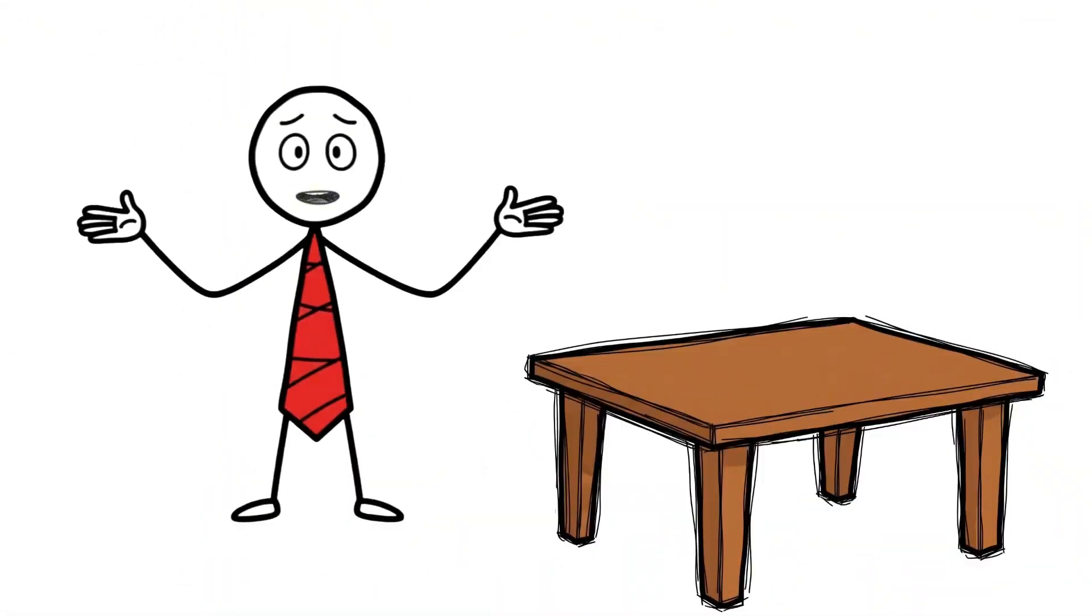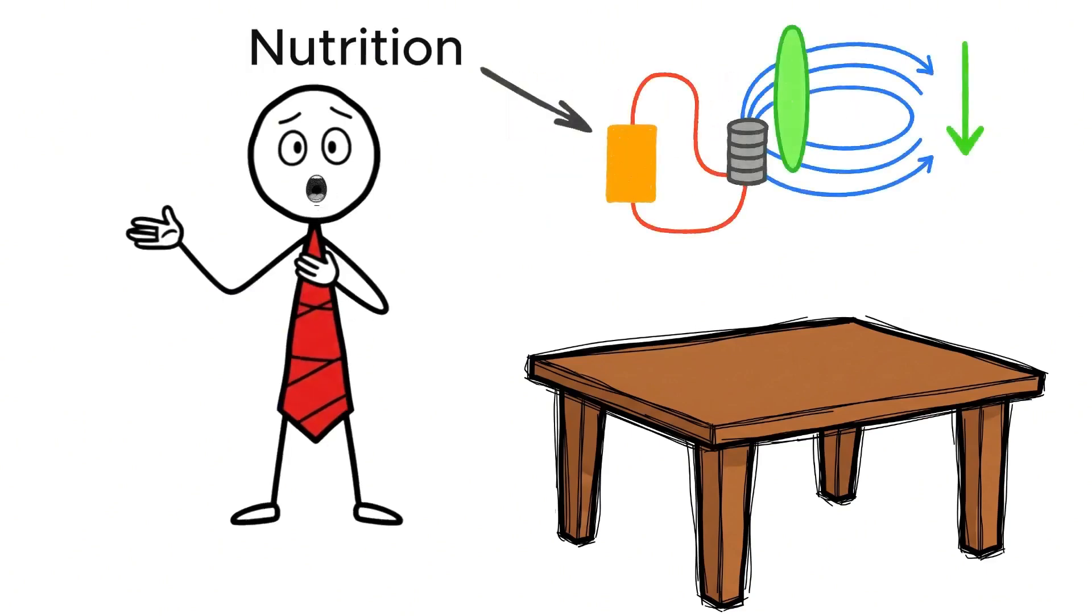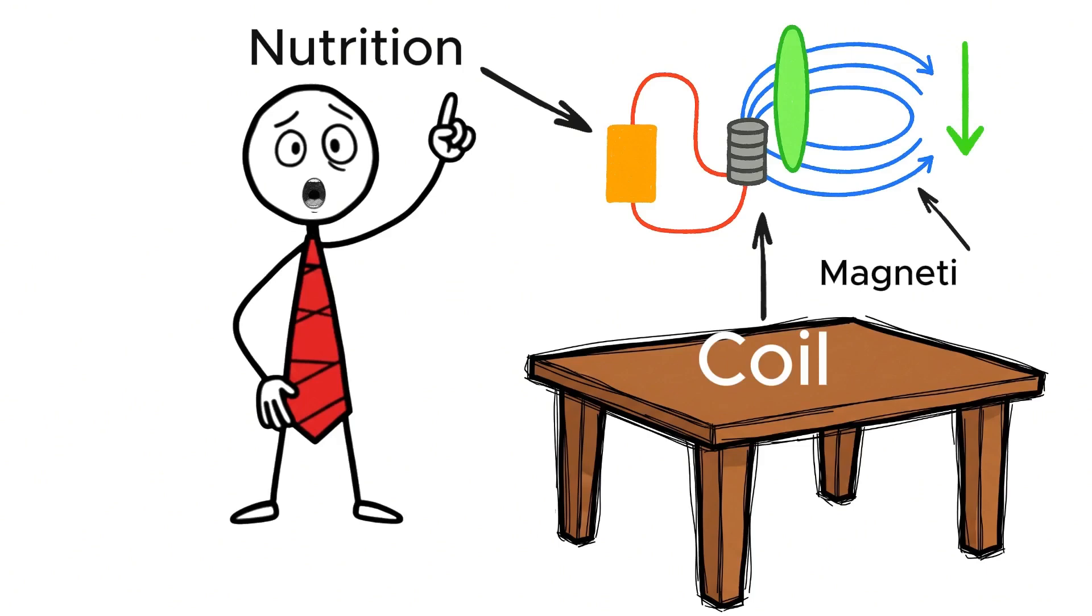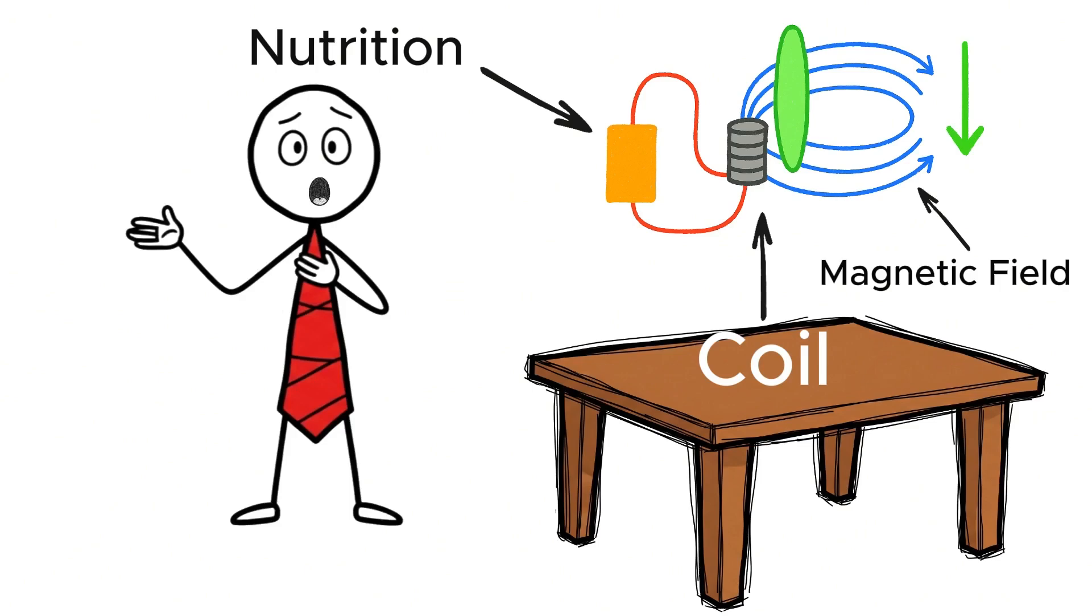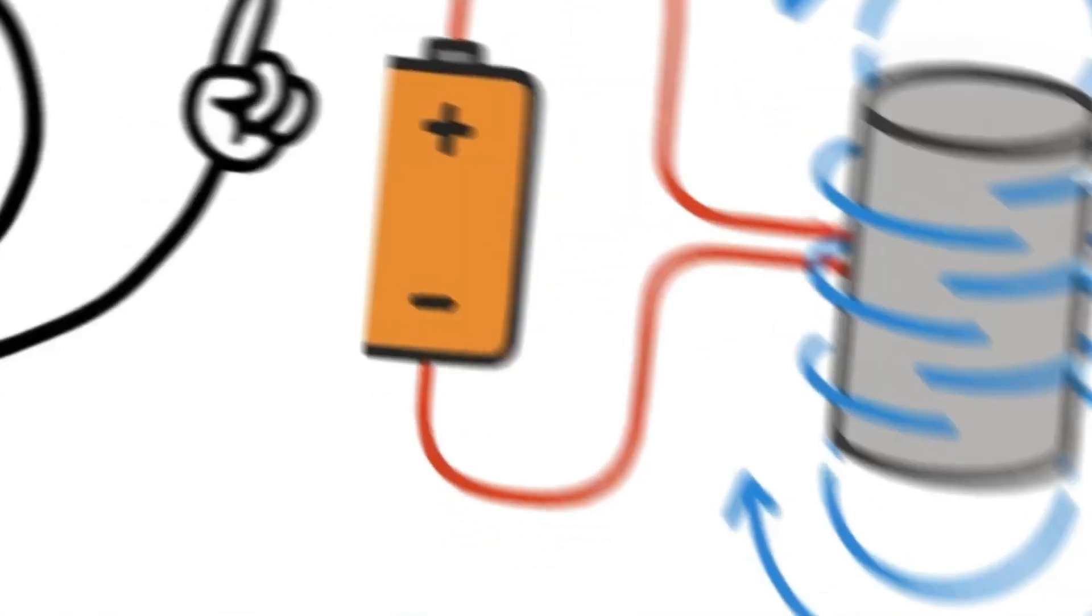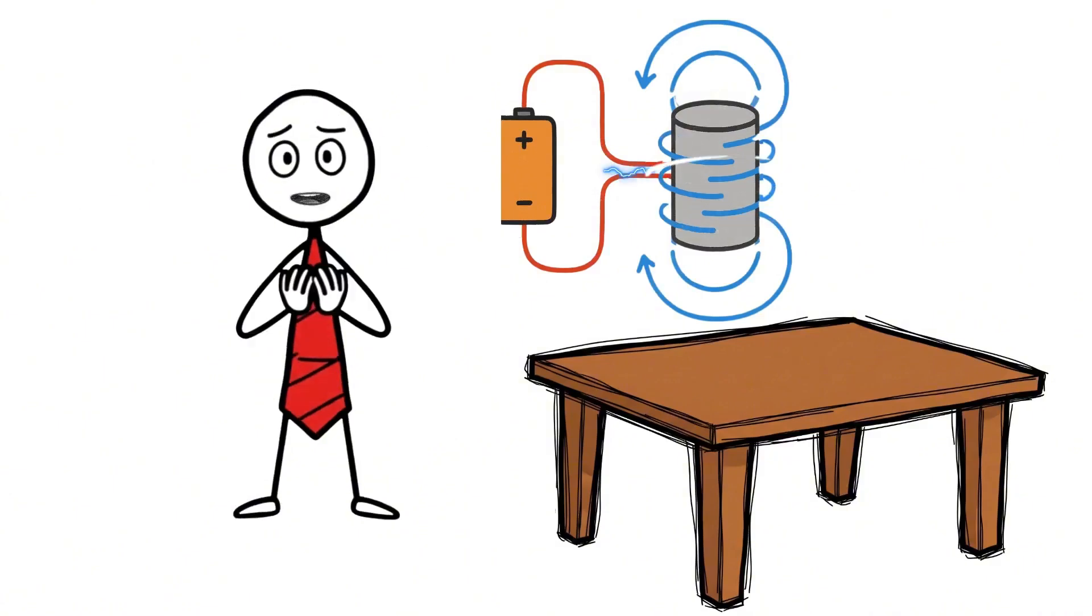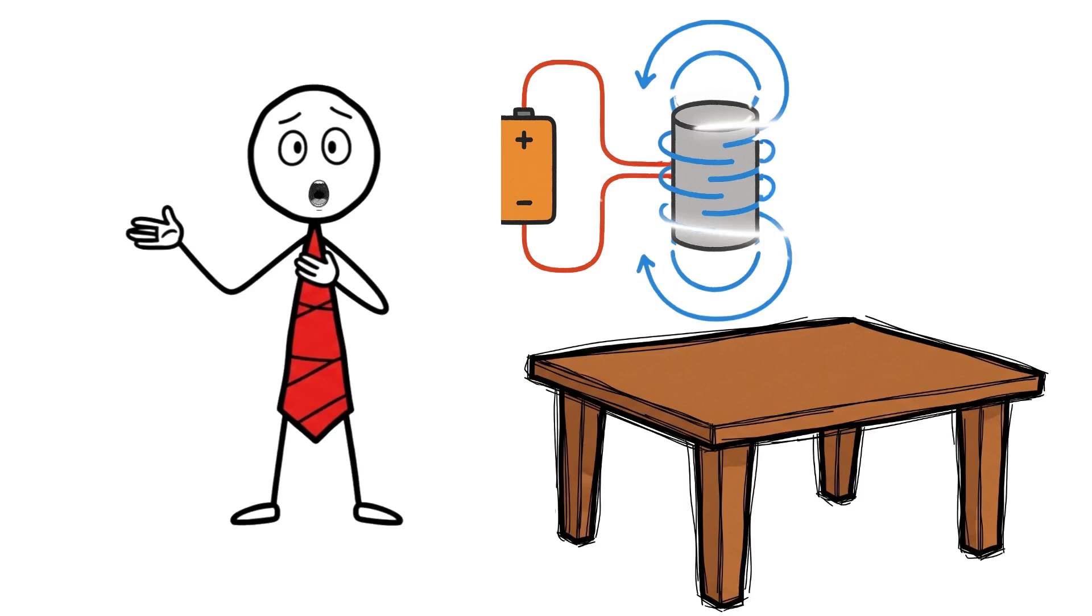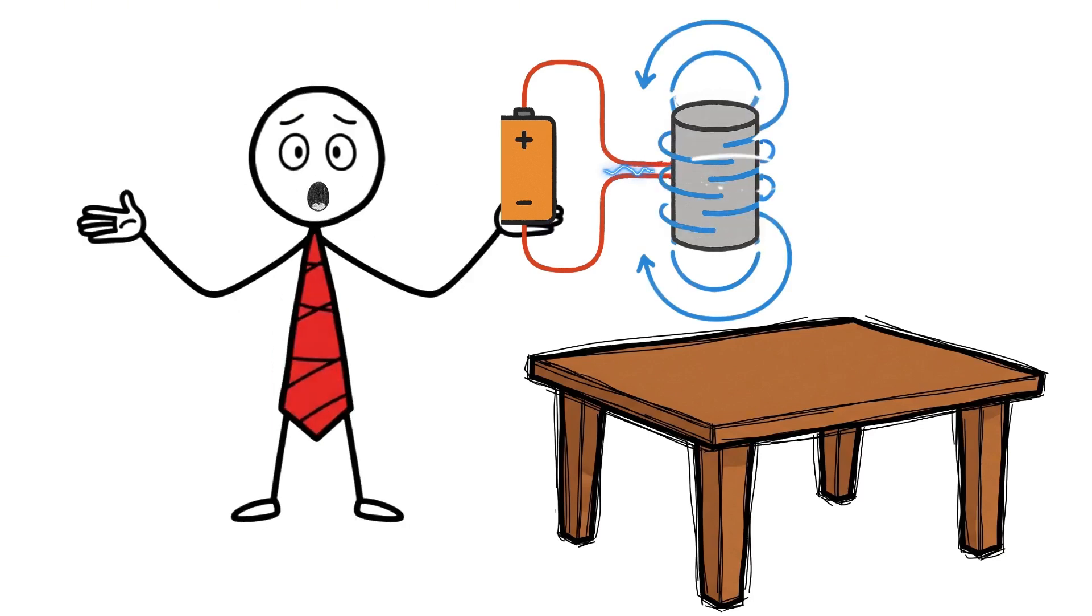Now for the magic, which comes from a principle called Lenz's Law. That powerful, changing magnetic field from the coil actually creates a separate loop of electric current inside the aluminum of the can itself. These are called eddy currents. And what happens when you have an electric current? It creates its own magnetic field.